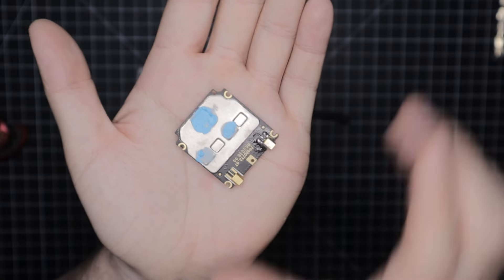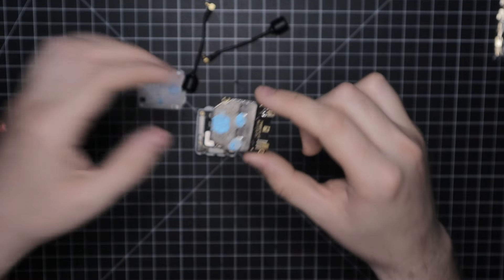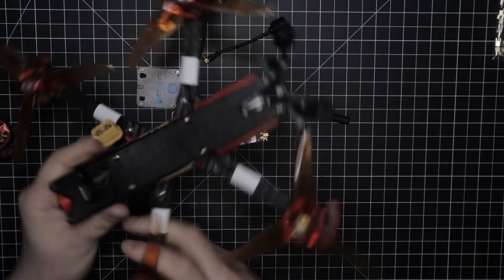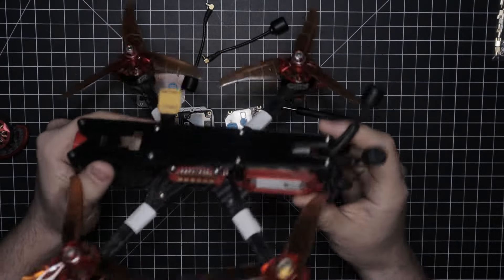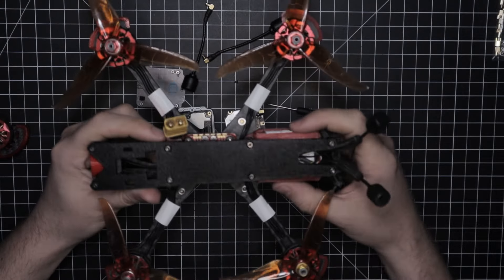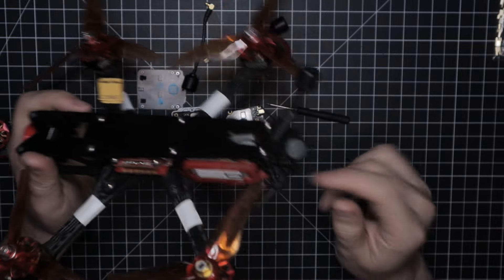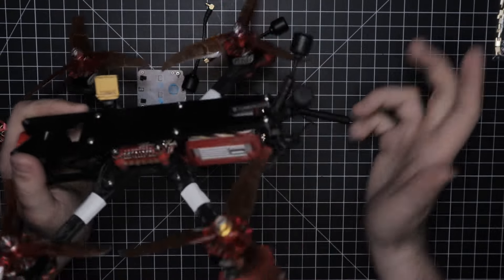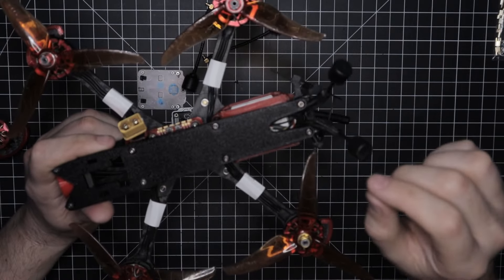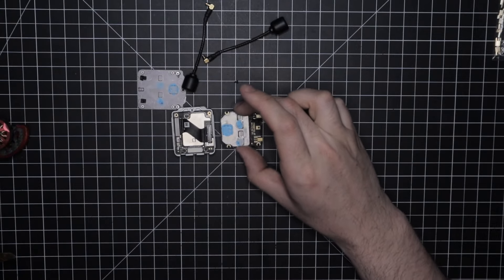But once I got this fixed, I was able to connect to the goggles. And for the hell of it, I actually tried it on a good air unit that I know works. So what I did was I took this quad here, which also has a DJI OG VTX in there, and I just disconnected one of the antennas—the correct one—and again, I wasn't able to bind to the goggles.